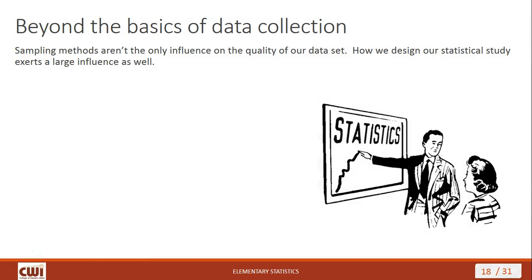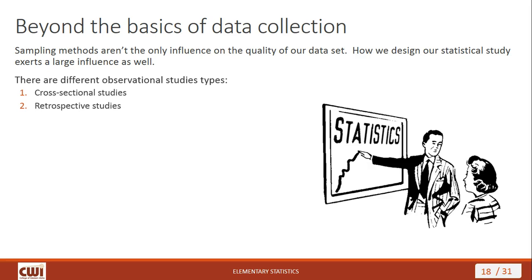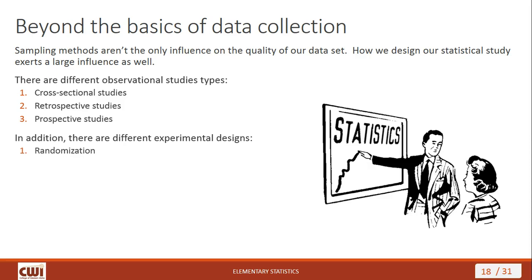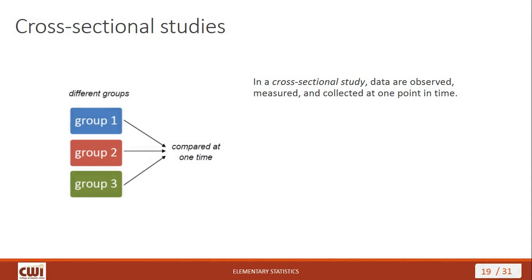Now let's go beyond the basics of data collection by looking at more than just sampling methods. Yes, you want to pay attention to sampling methods because it's a primary way we influence the quality of our data. But how we design our statistical study also exerts a large influence on the goodness of our study. There are different types of observational studies: cross-sectional, retrospective, and prospective. And there are different types of experimental designs: randomization, replication, and blinding.